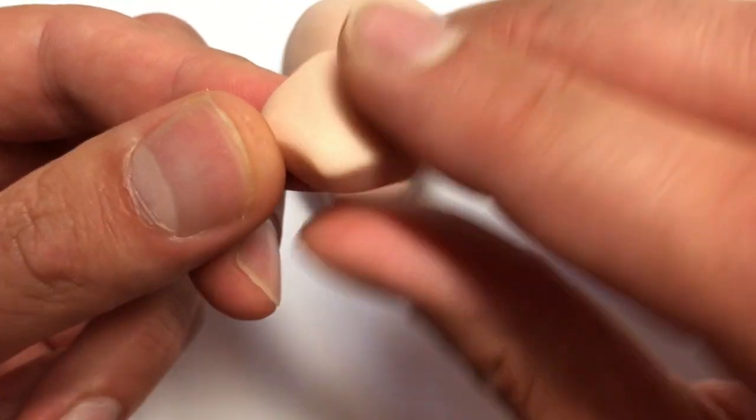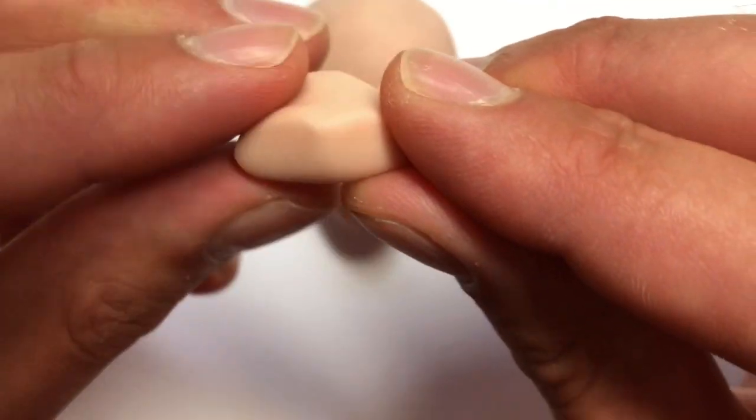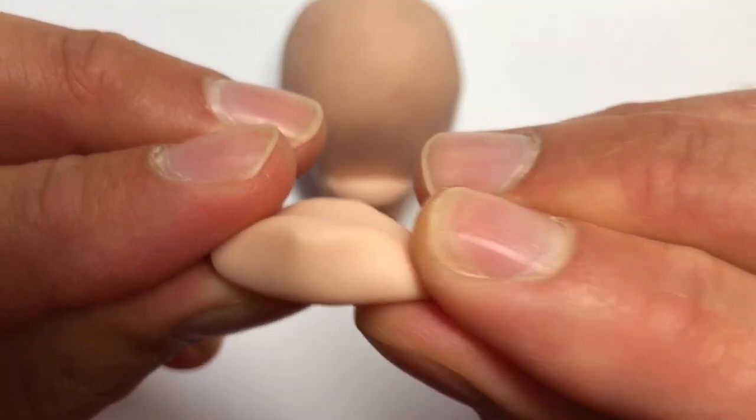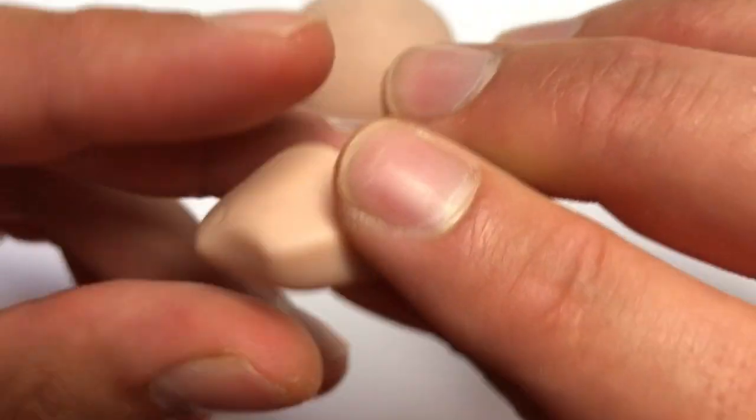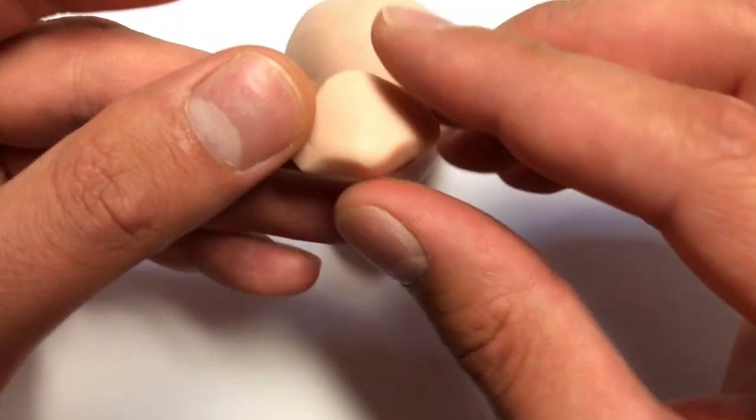Then I'm going to pinch the edges a little bit, make it more lip shaped, and then smooth out all of the edges so that they're thinner and it's easier to blend once I attach this.